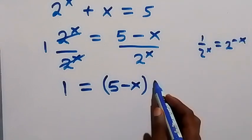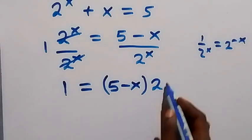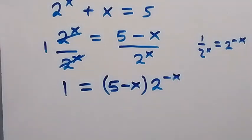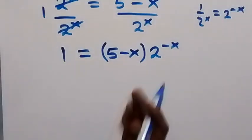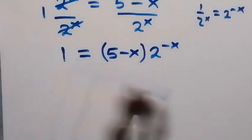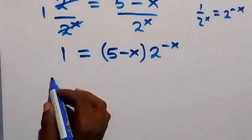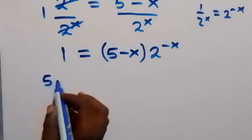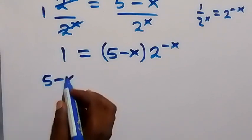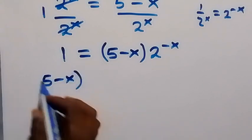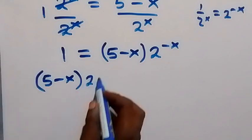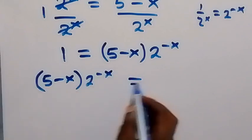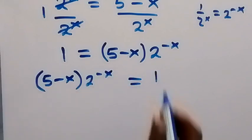We now have 5 minus x times 2 raised to power minus x equals to 1.